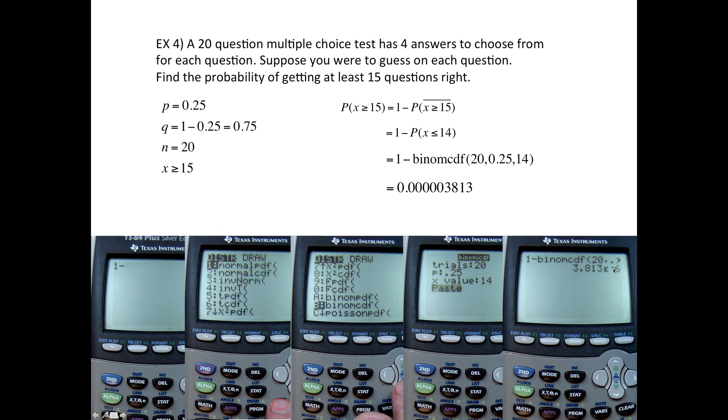And this is scientific notation saying move this decimal over to the left six places. Which means that we have one, two, three, four, five zeros as placeholders. And then, three, eight, one, three. So this is saying the chances of getting a C by guessing are very, very, very, very small. So please, study.